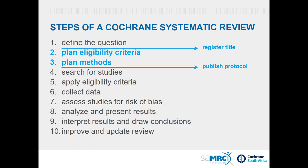Once your title is registered, the first part of the review process is to write the protocol. The protocol includes two important components: planning the eligibility criteria for the review — that is, which studies will be included and excluded — and planning out the methods to be used throughout the review process. Cochrane review protocols are published in the Cochrane Library before proceeding with the review.